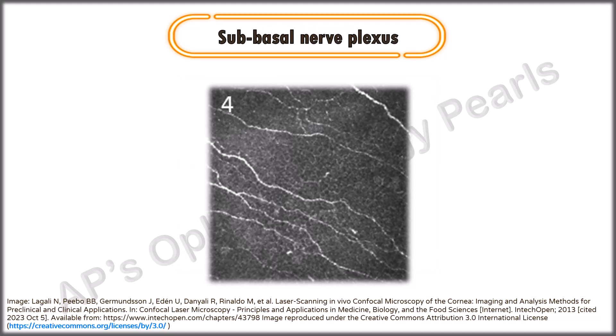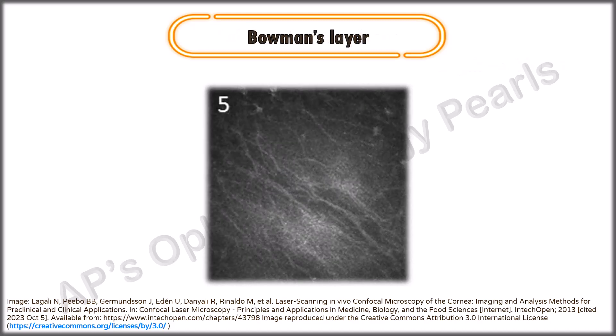The sub-basal nerve plexus runs parallel to the corneal surface and is seen as bright linear branching structures. The Bowman's layer is typically described as being amorphous.